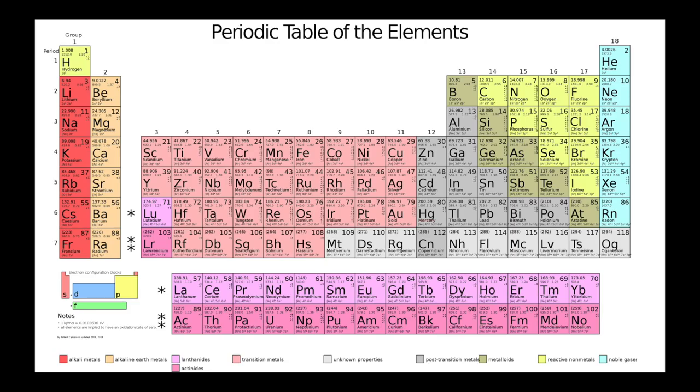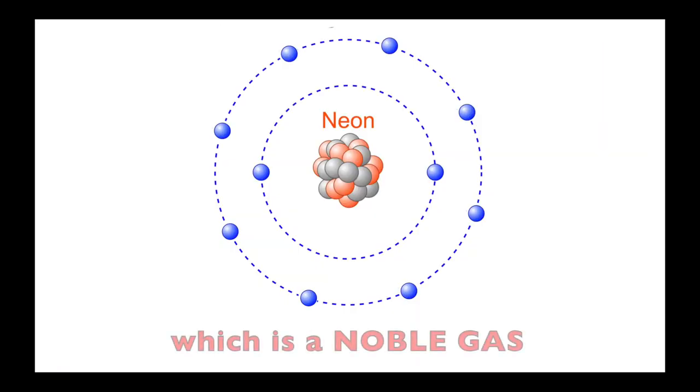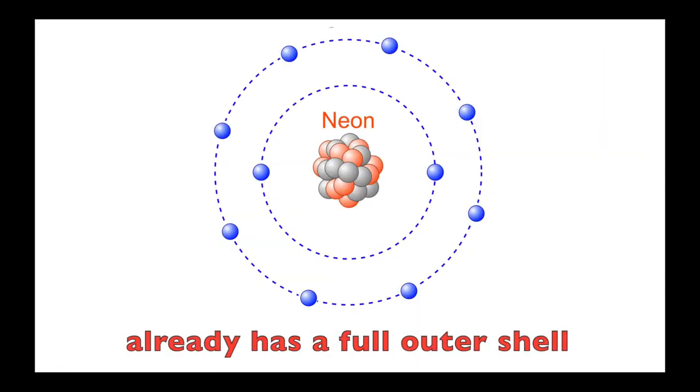Now let's go to the right side of the periodic table. Neon, which is a noble gas, already has a full outer shell.